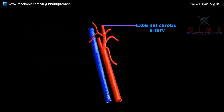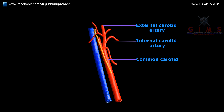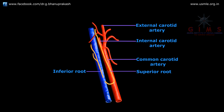This superior root descends over the internal carotid artery and the common carotid artery, and finally joins with the inferior root to form the ansa cervicalis.